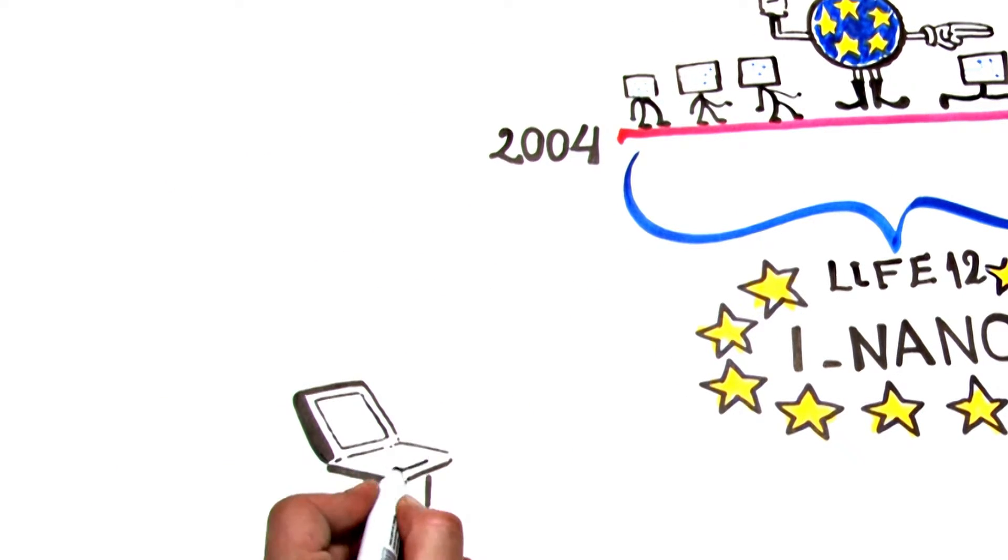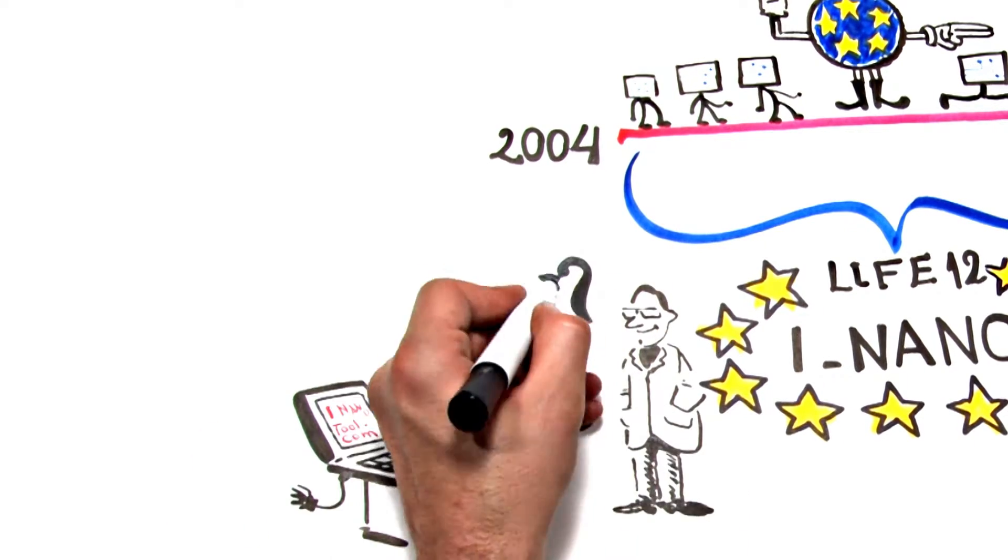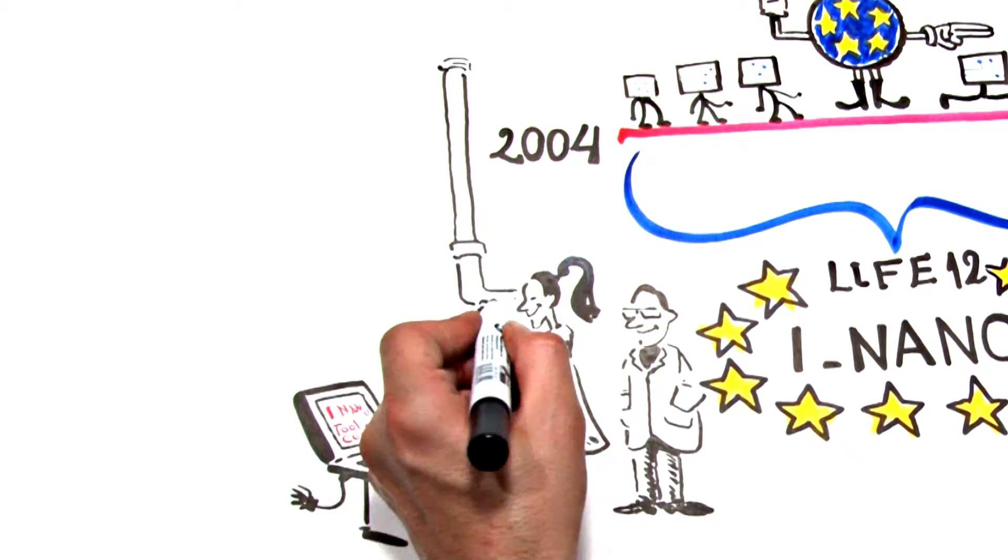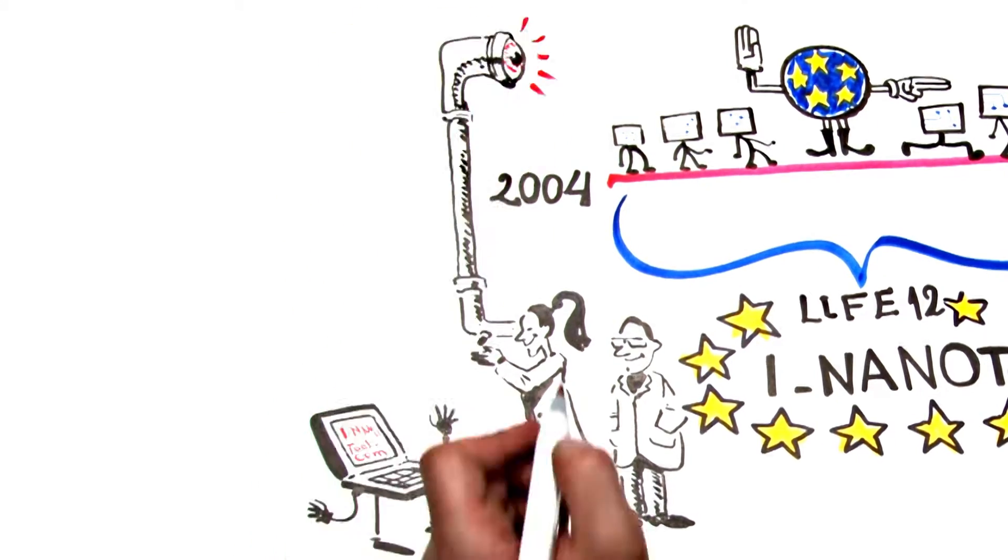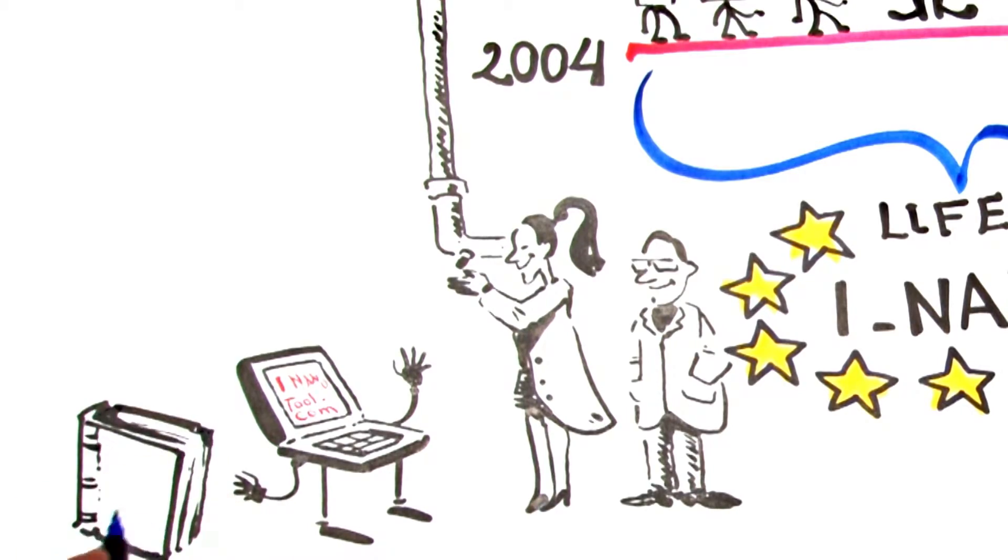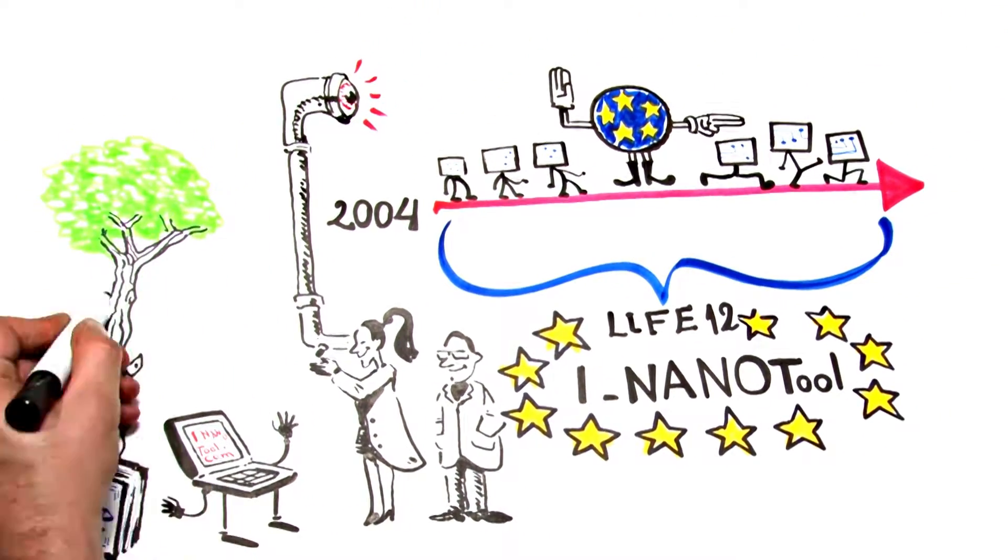Specifically, iNanotool.com is an interactive online platform through which manufacturers of nanomaterials can carry out their own environmental self-diagnosis and therefore assess and know to what extent they are complying with the requirements of environmental legislation applicable to their situation.